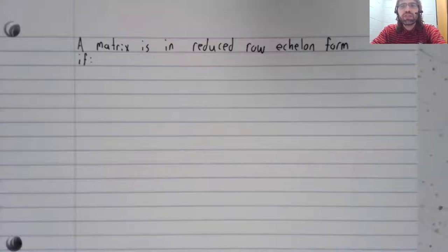A matrix is in reduced row echelon form if it satisfies three requirements.